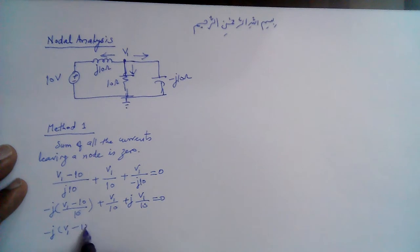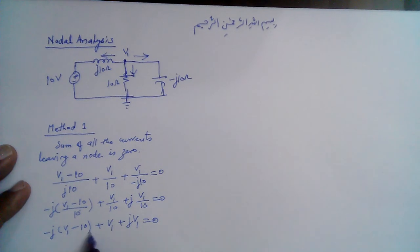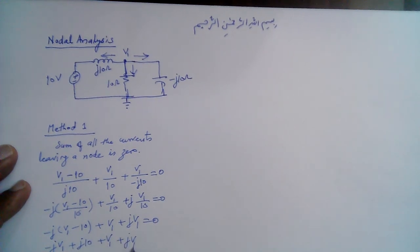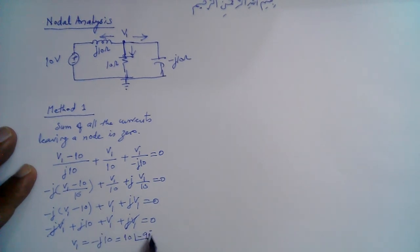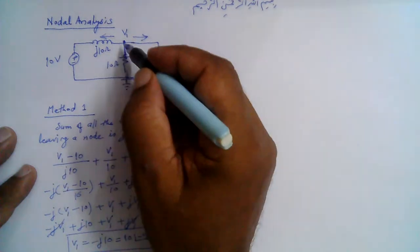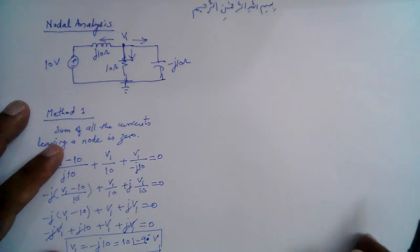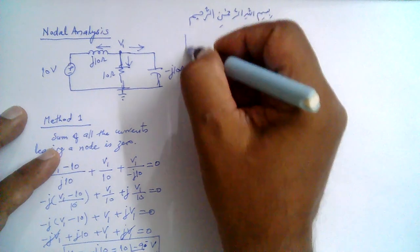Expanding: −jV1 + j10 + V1 + jV1 = 0. The −jV1 and +jV1 terms cancel, leaving V1 = −j10, which equals 10∠−90° volts. This is the voltage found at the node. The same voltage can be found another way.